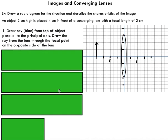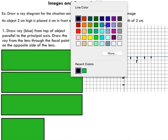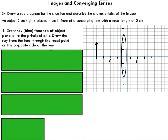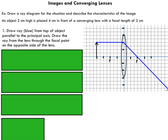Now I can start the ray diagram process, which is very similar to drawing ray diagrams for concave and convex mirrors. The steps are listed on the left. First, take the blue ray from the top of the object and draw it parallel to the principal axis so it strikes the lens. Once it hits the lens, this ray is refracted such that it passes through the focal point on the opposite side of the lens.